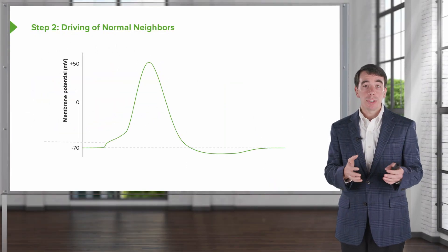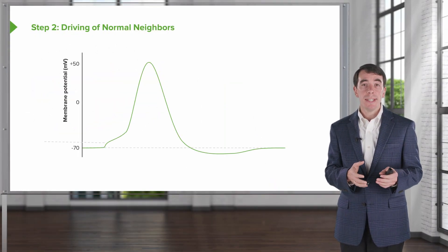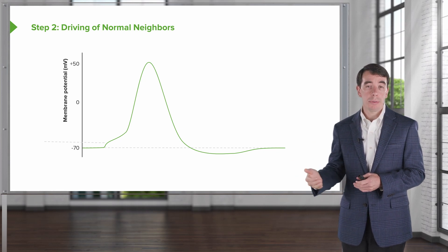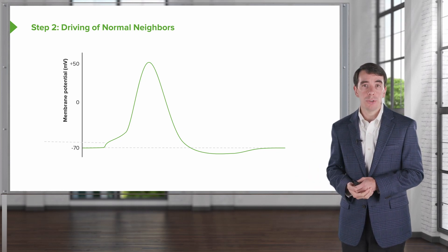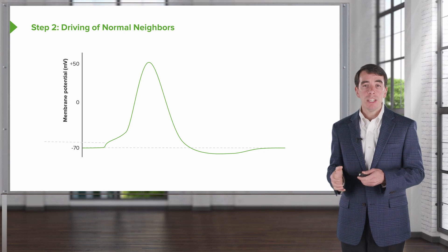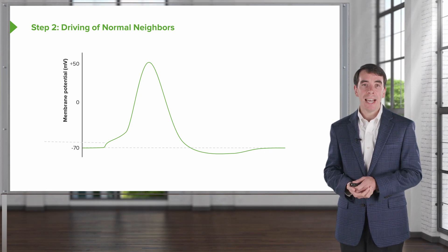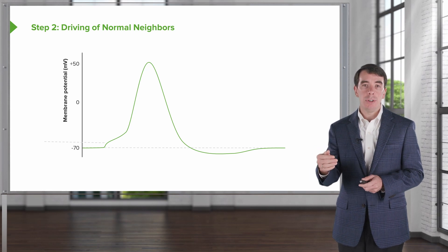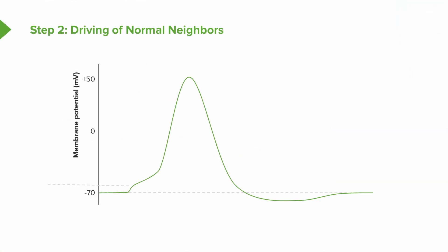The paroxysmal depolarization shift — the PDS — is not sufficient to create a seizure. We really need step two and three. And step two is the driving of normal neighbors. When we think about what happens to lead to an action potential or activation of a neuron, there are three steps. There's the rising phase, the peaking phase, and then the recovery phase.